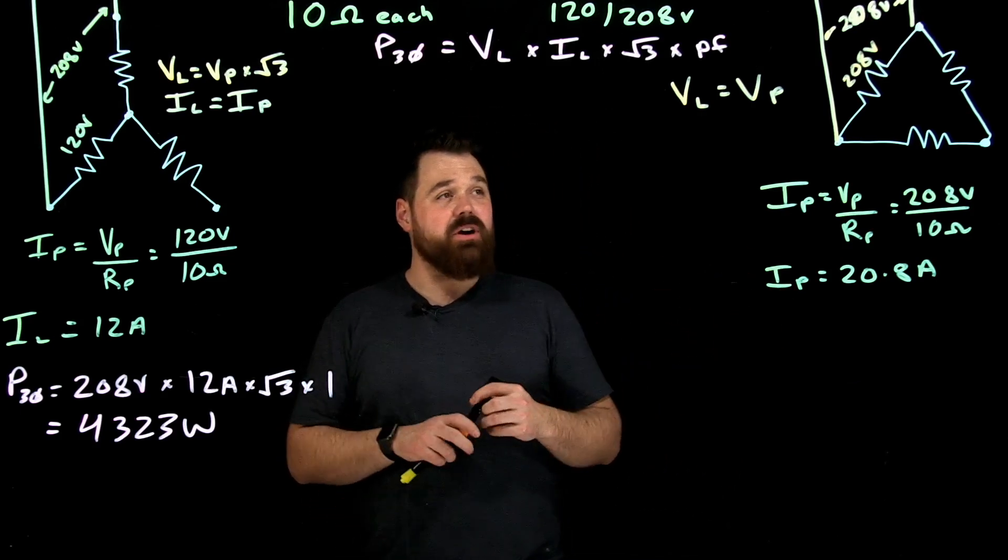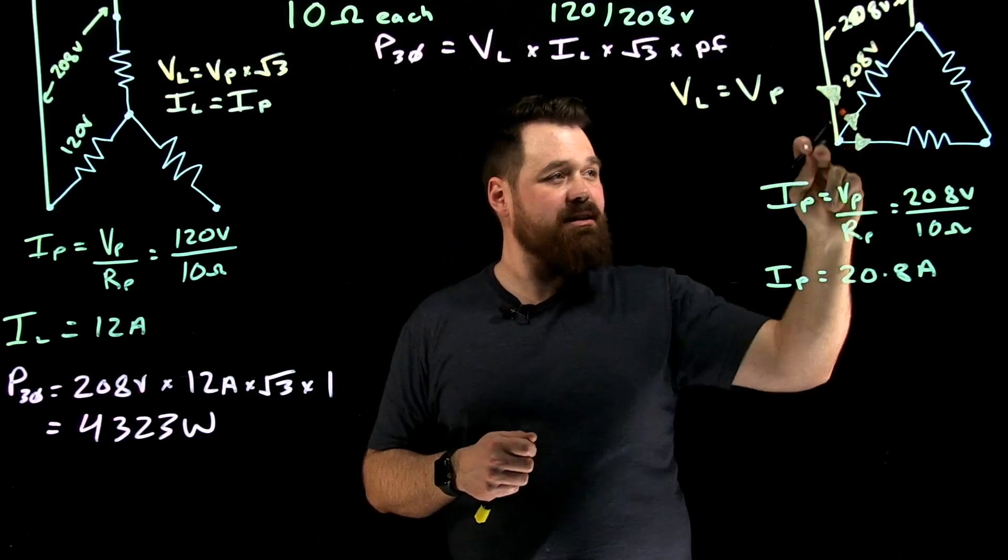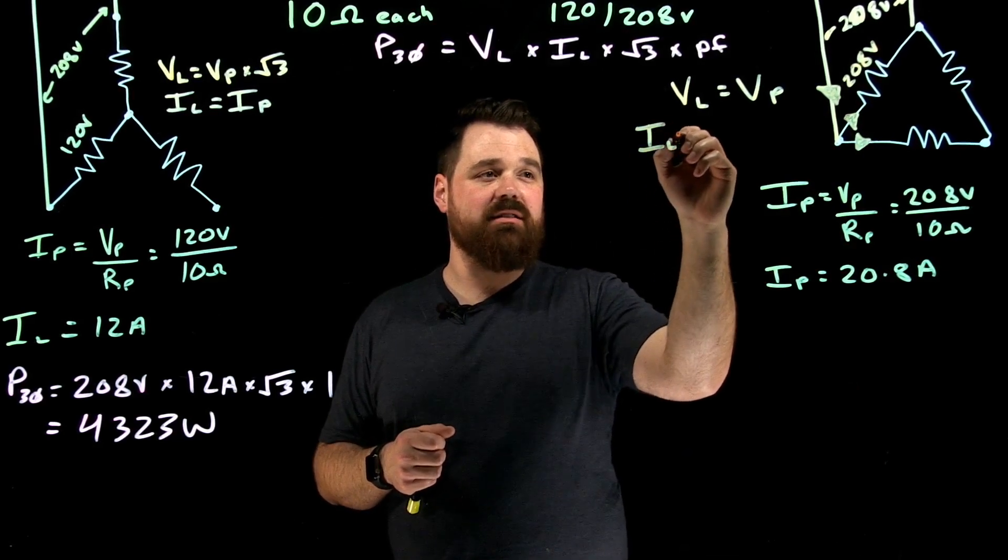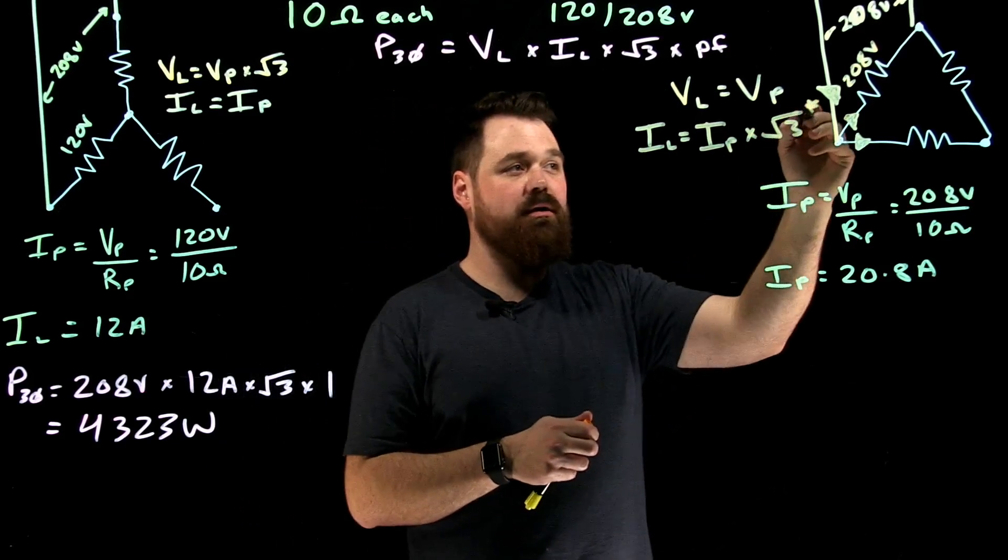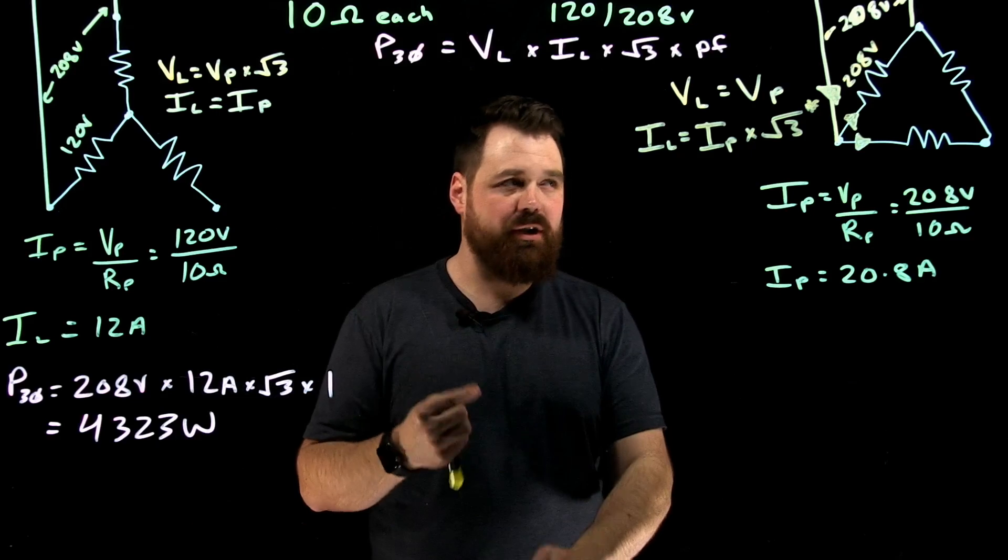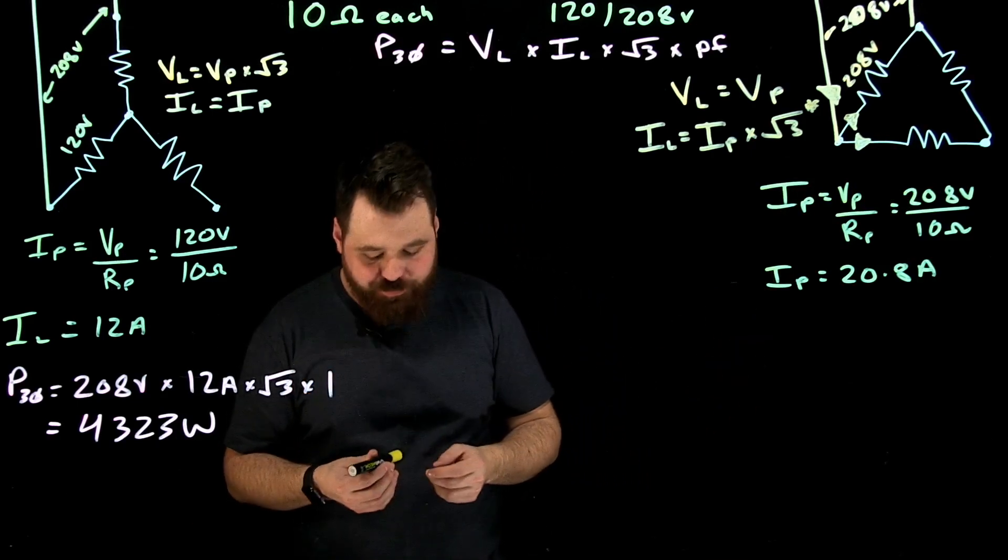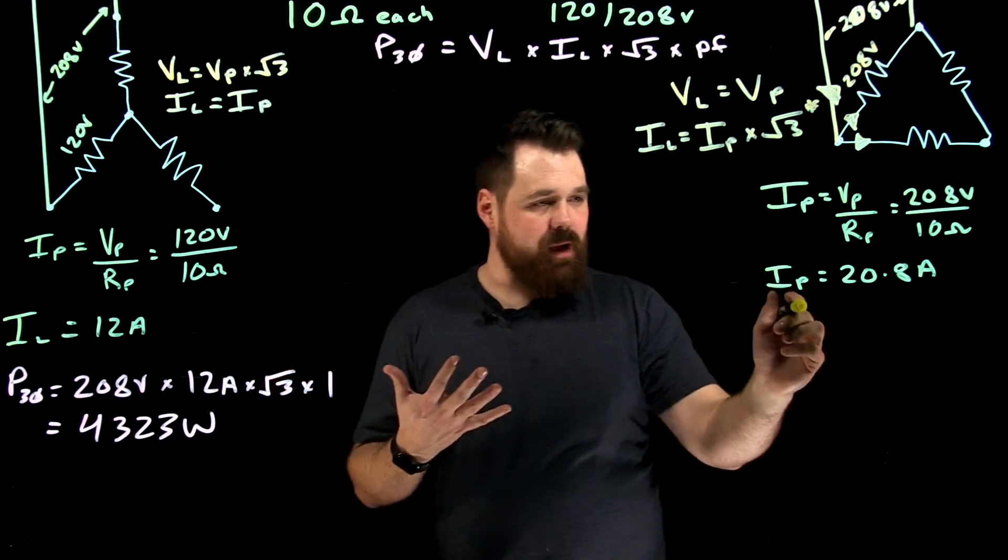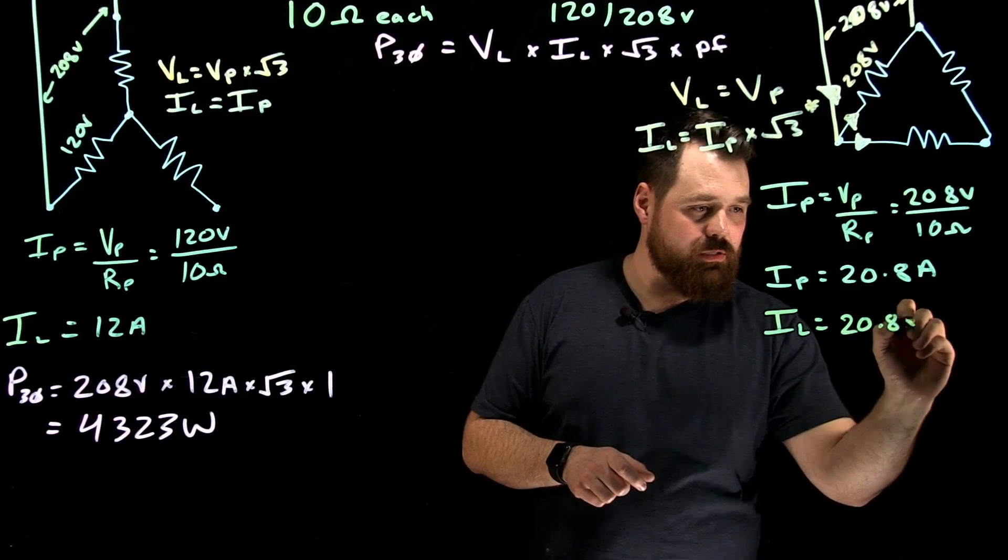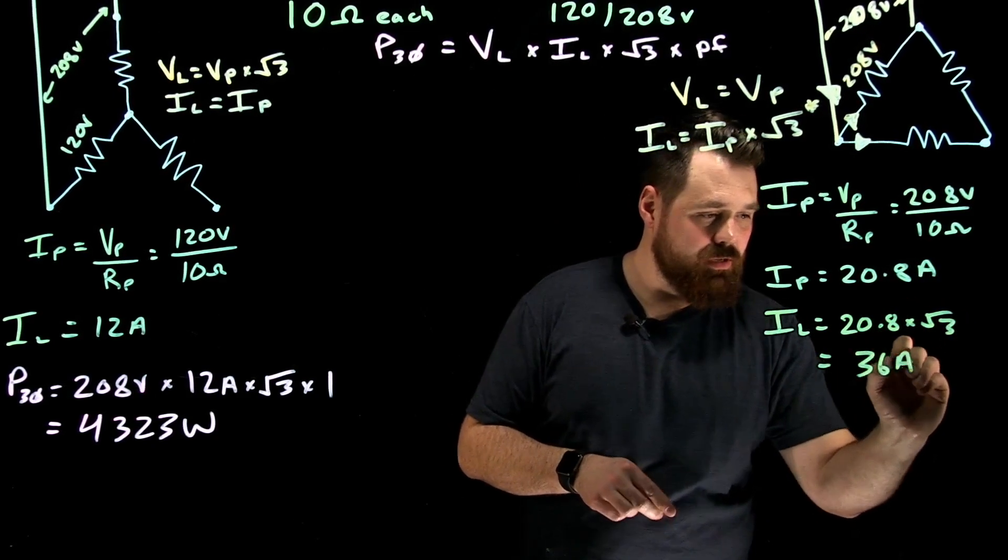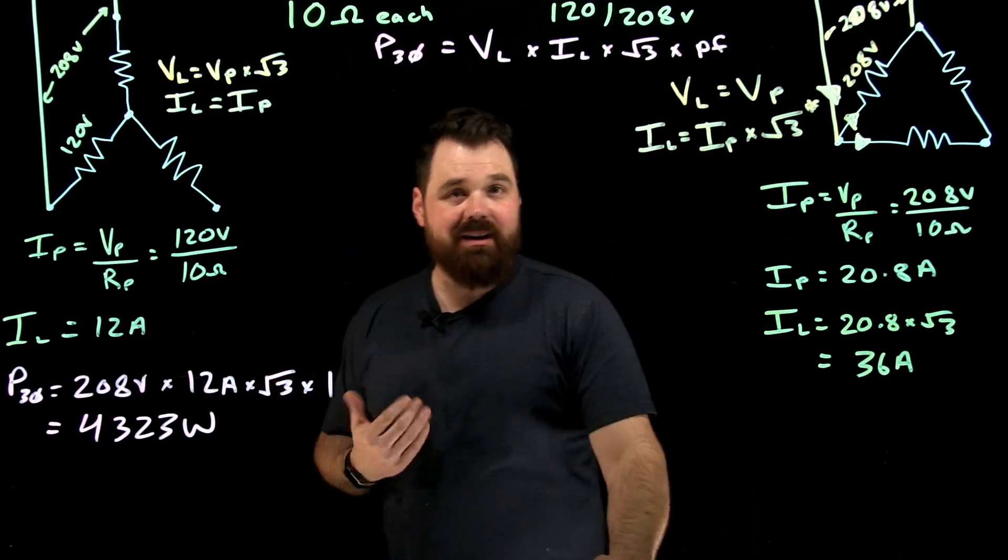Now I also want to keep in mind that in Delta, if I have a current here and a current here, Kirchhoff's current law tells us that my line current is the sum of those two phase currents. So my line current is actually my phase current times root three. Now that rule, I just want to put a little reminder there, that only works in a balanced Delta circuit. Because these are all three resistors, all the power factor of one, impedance of 10, this is considered a balanced circuit. So now what we want to do is, okay, if my I phase is 20.8 amps, my I line is going to be 20.8 times root three, it actually gives me 36 amps. So this line current is much, much, much higher in Delta than it was in Y, and I'll see how that affects our power.